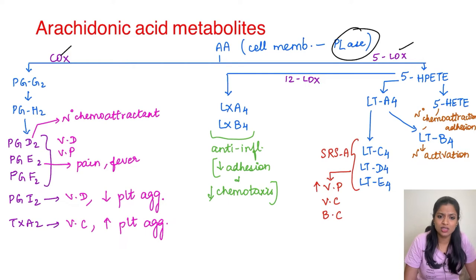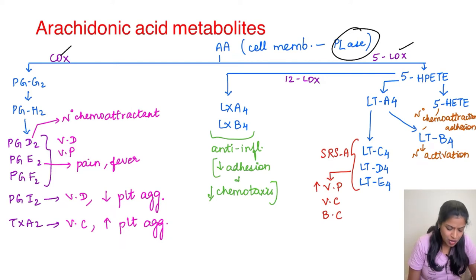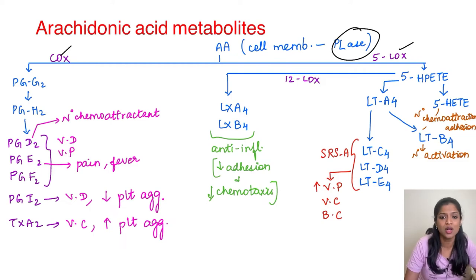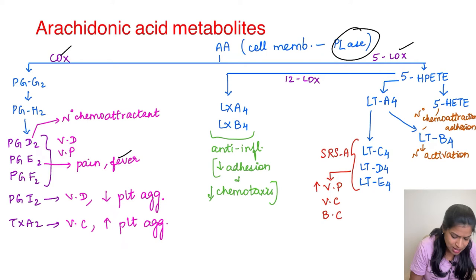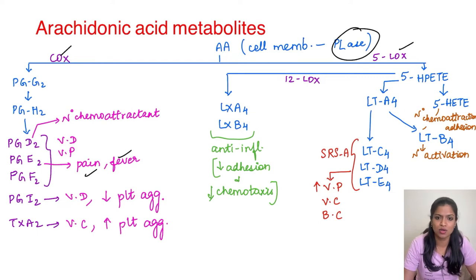After derivation, arachidonic acid can undergo two pathways: the cyclooxygenase pathway or the lipoxygenase pathway. With the help of the cyclooxygenase enzyme, arachidonic acid gets converted into various prostaglandins — PGG2, H2, D2, E2, F2, prostaglandin I2 (also called prostacyclin), and thromboxane A2. The major function of PGD2, E2, and F2 is to cause vascular dilatation and vascular permeability. PGD2 is also responsible for neutrophil chemotaxis. PGE2 is special for pyrexia and pain — remember it as PNP. PGF2 increases uterine contraction; that is why during labor we use dinoprostone, which is prostaglandin F2 alpha.